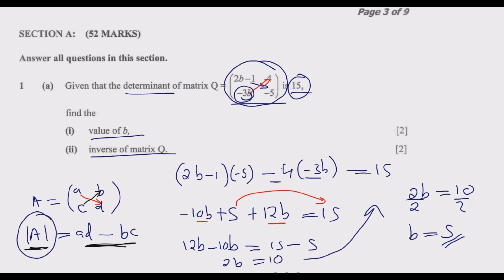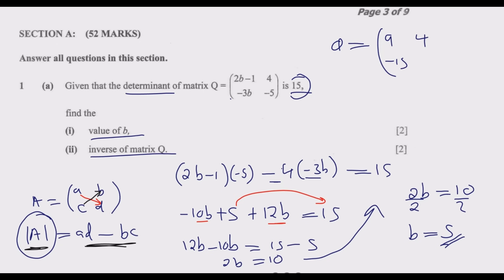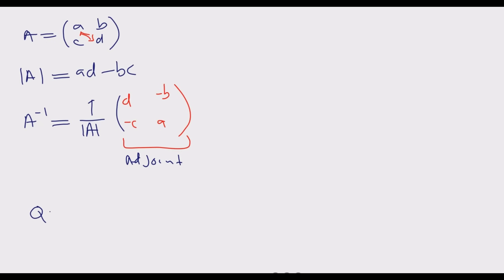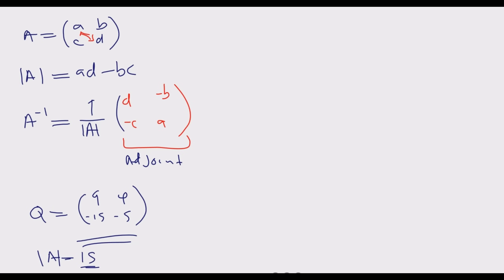Using this principle, now that we know B equals 5, we substitute to find the actual matrix Q. So 2 times 5 minus 1 gives 9 in position A, then 4 remains, then negative 3 times 5 gives negative 15, and negative 5 remains. Therefore matrix Q is the 2×2 matrix with entries 9, 4, negative 15, negative 5.